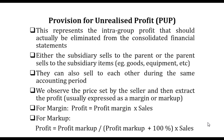Why provision for unrealized profit, and when does it arise? This arises in the consolidated financial statements where trade occurs between the parent and subsidiary, or it could be between the parent and an associate and the reverse.